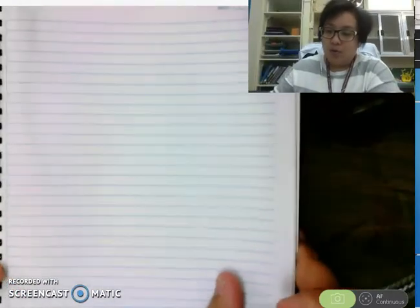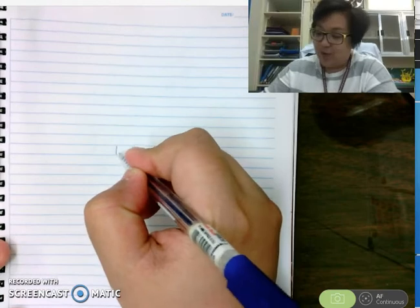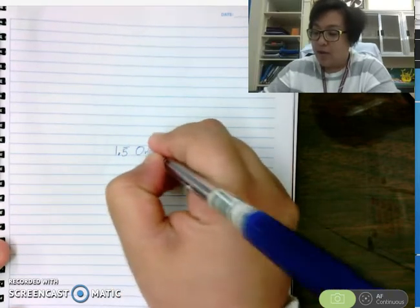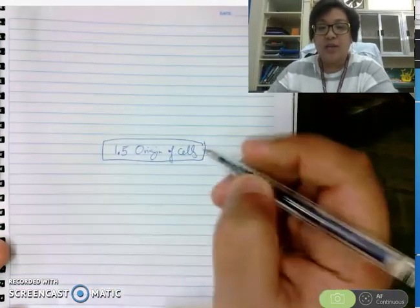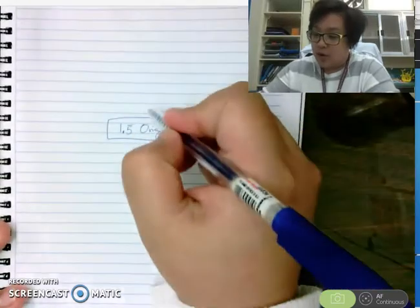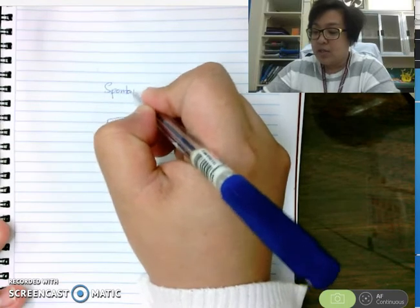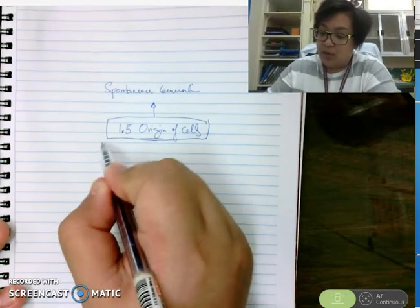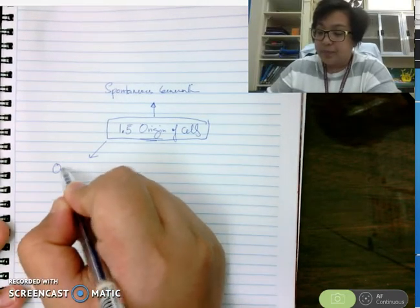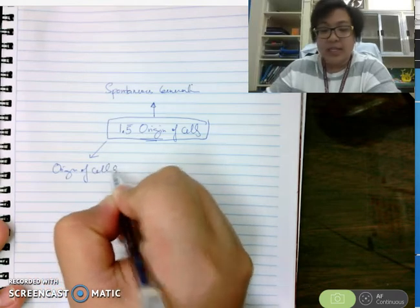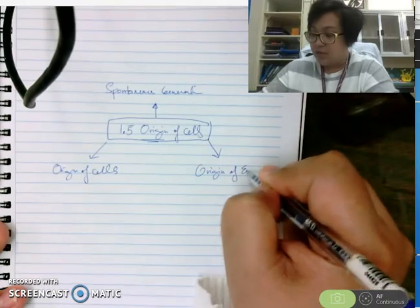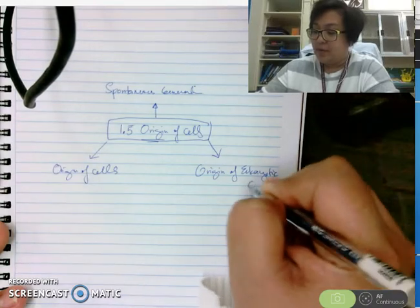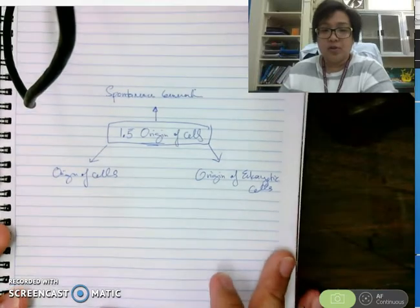We start this chapter from 1.5, and the title is 'Origin of Cells.' There are three things you have to learn in this chapter: first, the theory of spontaneous generation; second, the origins of cells and where cells came from; and lastly, the theory of how eukaryotic cells evolved — the origin of eukaryotic cells.